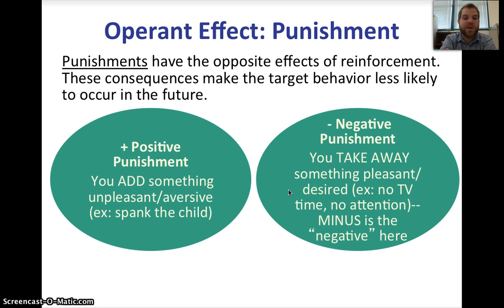With positive punishment, you add something unpleasant or aversive — you spank the child, you send them to their room, you make them do extra homework. But negative punishment is when you take something pleasant or desired away. So minus is the negative here — no TV time, your freedom is restricted, you have to sit in the corner. So positive punishment is where you add something, and negative punishment is where you take away.